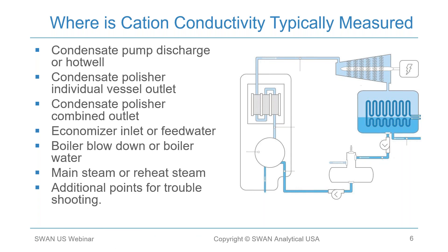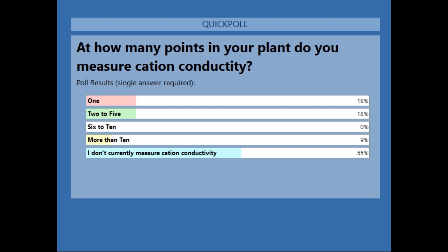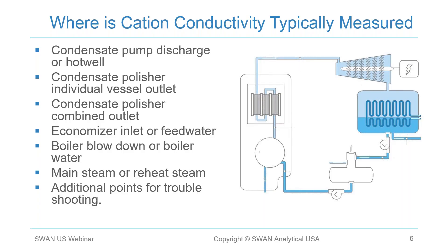At this point, we're going to take a quick poll. We'd like to know how you are measuring cation conductivity — whether it's at many places in your plant or not at all. The poll results show that the majority of power plants do measure cation conductivity at some point, with many measuring at two to five points and even a few at more than ten. Thank you very much for your feedback.